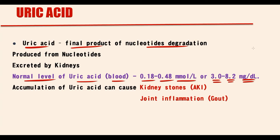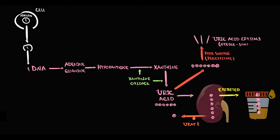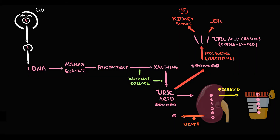Why is uric acid important? Increasing uric acid can be dangerous. Uric acid is a poorly soluble molecule, and because of this it easily precipitates, forming uric acid crystals with a characteristic needle shape. Formation of these crystals in the kidney tubules can cause kidney stones, and accumulation of uric acid stones in the kidney tubules can cause acute kidney injury. Accumulation of uric acid crystals in the joints can cause inflammation, a condition known as gout.